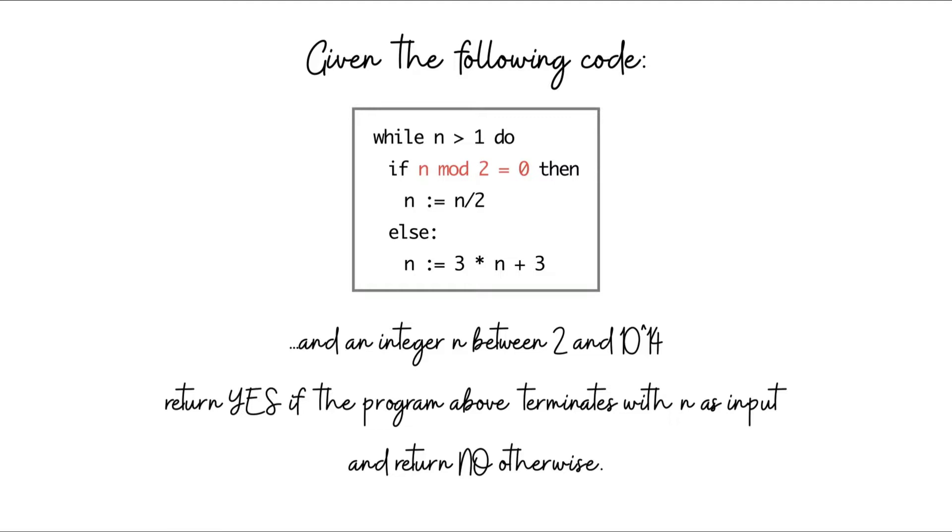What would be the most natural way to solve this problem? It might occur to you that we should just simulate this code snippet on the given value of n and see if it terminates or not. That's fairly natural, but you can probably already see why it's going to be problematic.